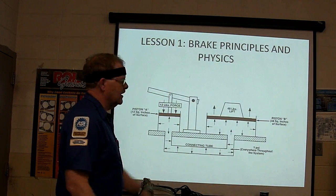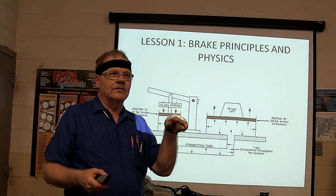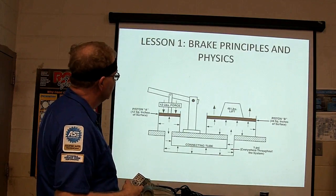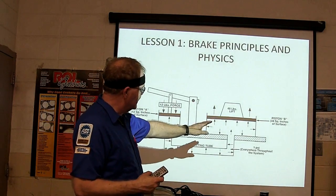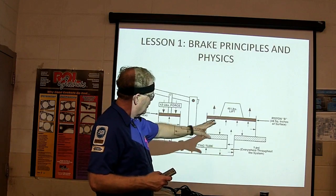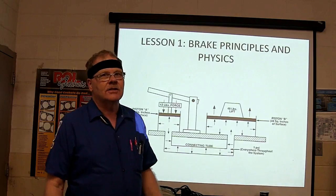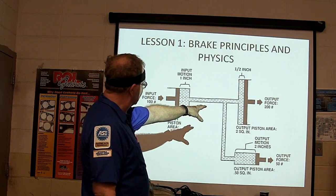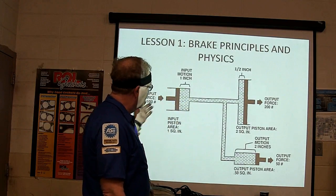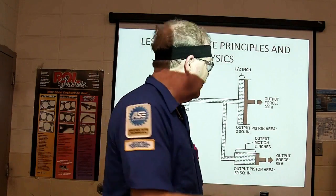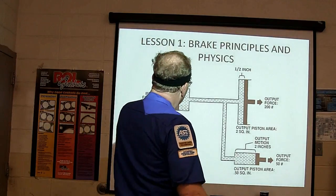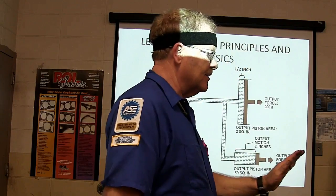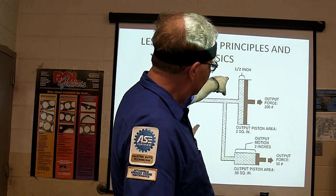You've got 12 pounds of force here, 48 pounds of force there. Pascal's law — one PSI throughout the system. Wherever you're putting one PSI, it's one PSI everywhere. Since you've got more square inches on one side, you're going to have more force. Move one inch here, you move a half inch there because it's twice as big. You don't move as far, but you move with twice as much force — you've got to trade off. If the piston is half as big, it's going to move twice as far with only half as much force.